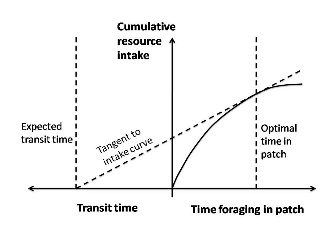At the extremes of the loading curve, animals spend too much time traveling for a small payoff, or they search too long in a given patch for an ineffective load. The MVT identifies the best possible intermediate between these extremes.